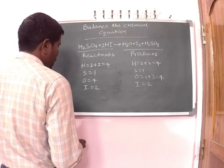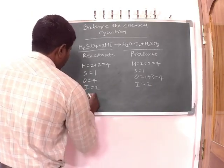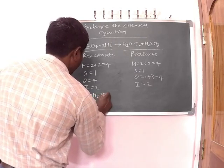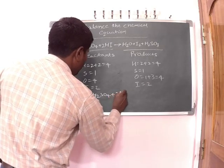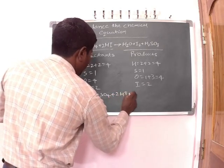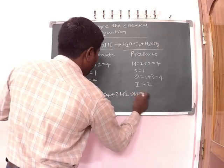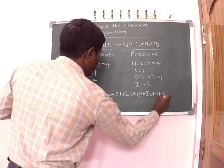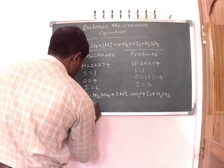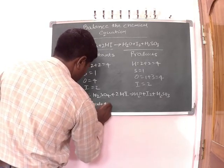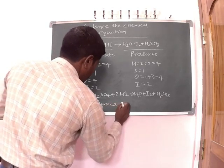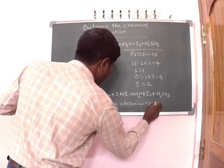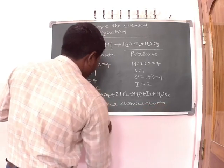Now the number of atoms are balanced in the two sides. So the equation is now balanced. Therefore, H2SO4 plus 2HI gives us H2O plus I2 plus H2SO3.